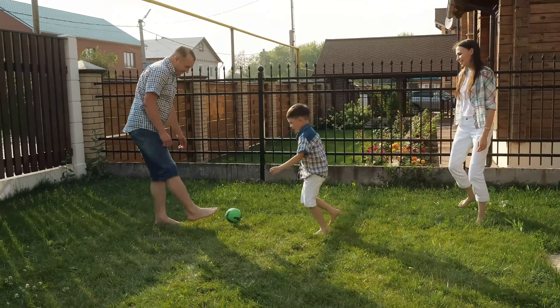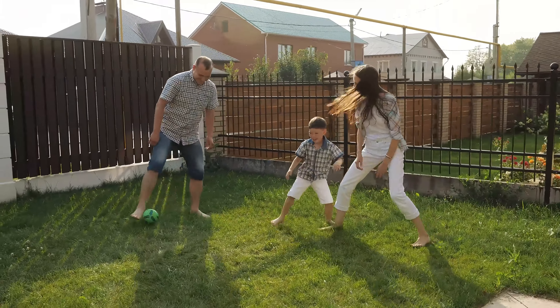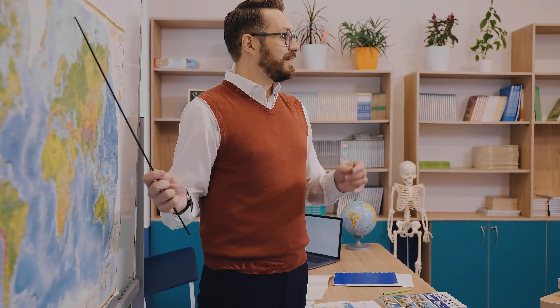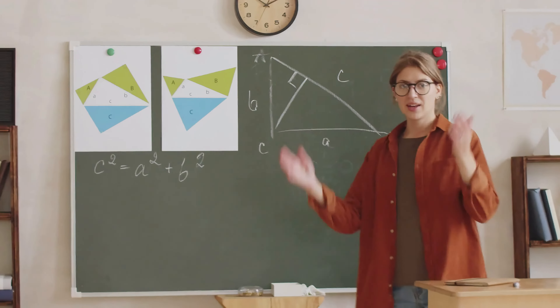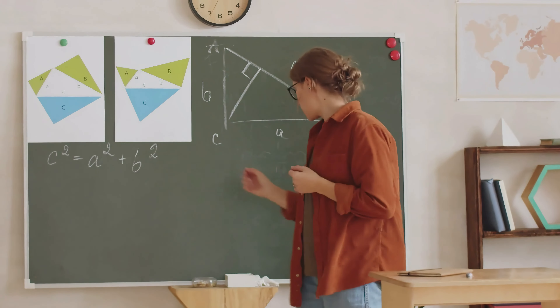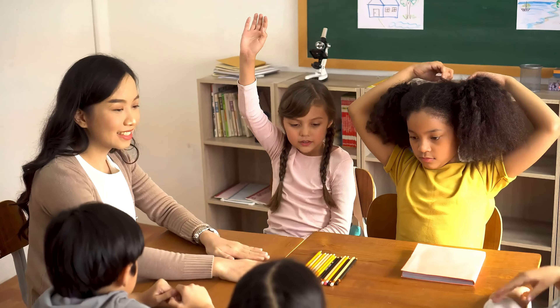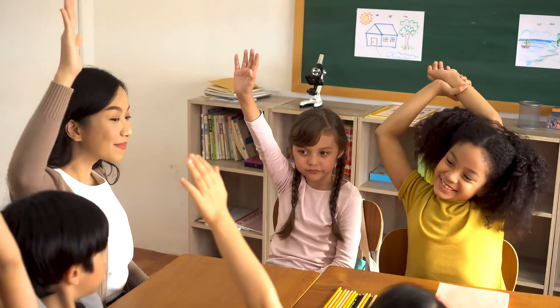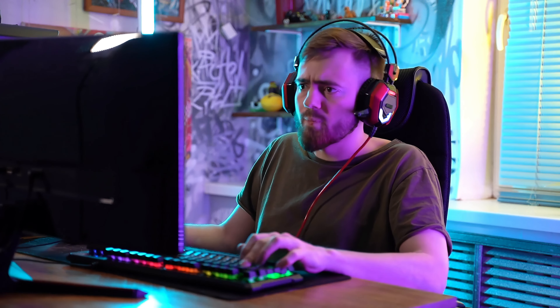Parents can also work with teachers to ensure their child gets the necessary support at school. Teachers can support students with ADHD by giving extra time for tests, breaking down assignments, and using visual aids to keep students engaged. For example, Mrs. Jones uses colorful charts to help her student Kevin stay on track. She also allows him to take short breaks to walk around. Adults with ADHD can benefit from workplace accommodations like flexible schedules or quiet workspaces. John finds that using noise-canceling headphones helps him focus better at his job, and he uses a digital planner to keep track of deadlines and meetings.